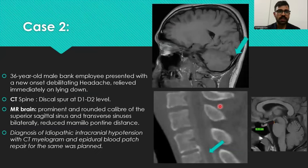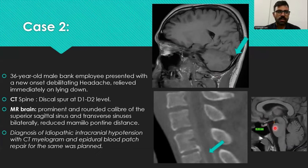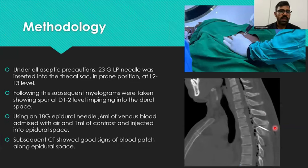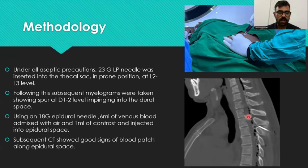Case 2 is a 36-year-old male banker who presented with acute onset debilitating headache relieved immediately on lying down. CT spine showed a spur at the D1-D2 level, and MRI brain showed prominent and rounded caliber of the superior sagittal sinus and transverse sinuses bilaterally with reduced pontomammillary distance. Diagnosis of idiopathic intracranial hypotension was made and CT myelogram with epidural blood patch repair was planned. Under strict aseptic precautions, a 23-gauge LP needle was inserted into the thecal sac in prone position at L2-L3. Subsequent myelogram confirmed the spur at D1-D2 impinging onto the dural space. Using an 18-gauge epidural needle, 6 ml of venous blood admixed with air and 1 ml of contrast was injected into the epidural space. Subsequent CT showed good signs of blood patch percolation along the epidural space.